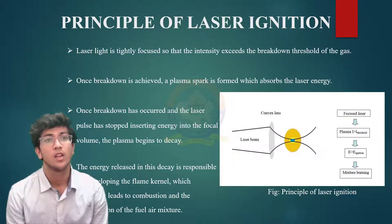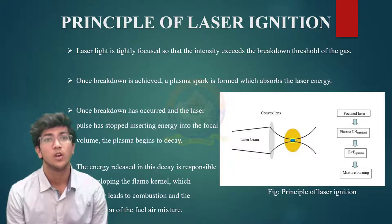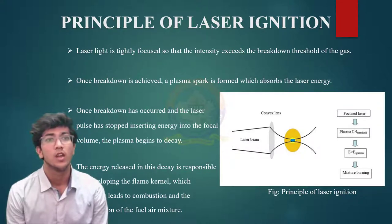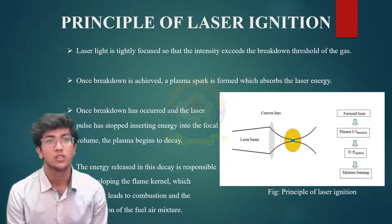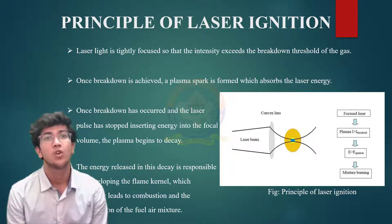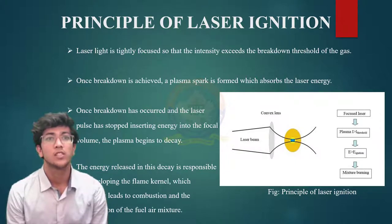Now let's see the basic principle of the laser ignition system. Laser light is tightly focused so that its intensity exceeds the breakdown threshold of the gas. Every fuel or gas has a threshold value for breakdown, and the laser must meet that value. After breakdown is achieved, a plasma spark is formed which absorbs the laser energy. Once breakdown has occurred and the laser stops inserting energy into the focal volume, the plasma begins to decay. After the energy is released, the decaying plasma is responsible for developing the flame kernel, which ultimately leads to combustion of the fuel mixture. When the laser beam is passed through a convex lens, the lens converges the beam and makes it sufficiently intense to start combustion at that focal point, as shown in the figure.